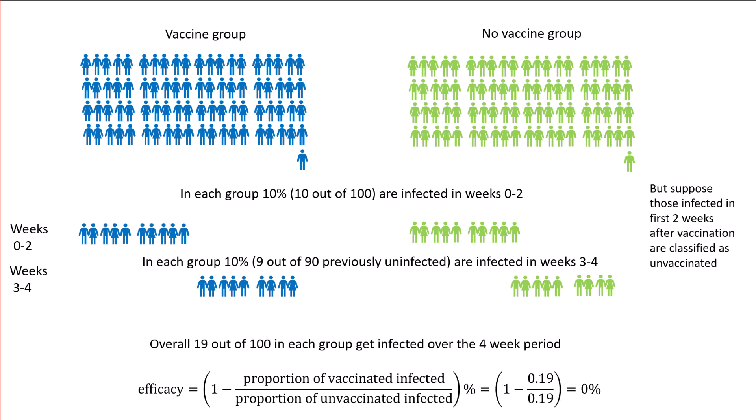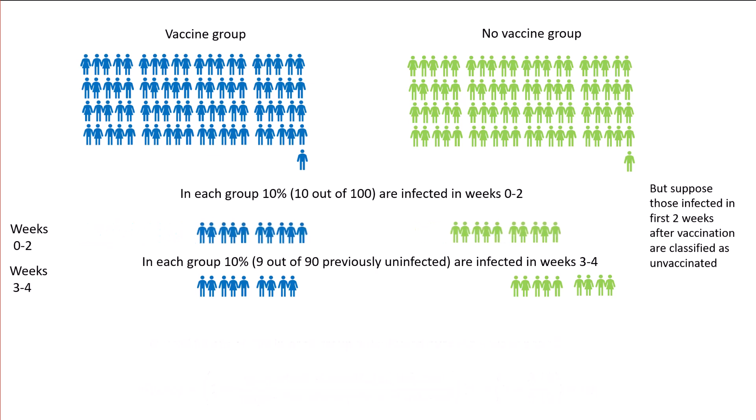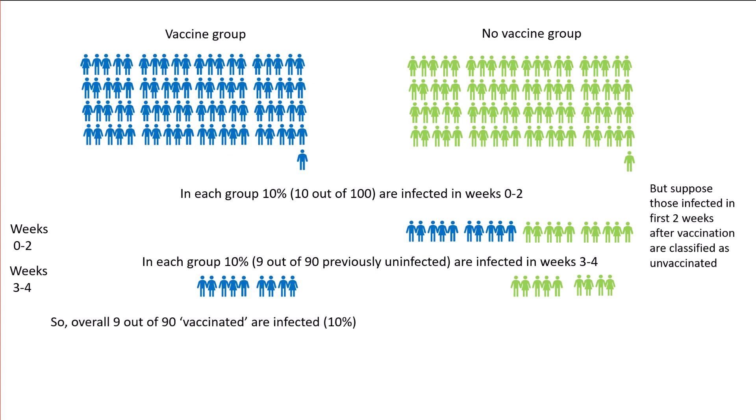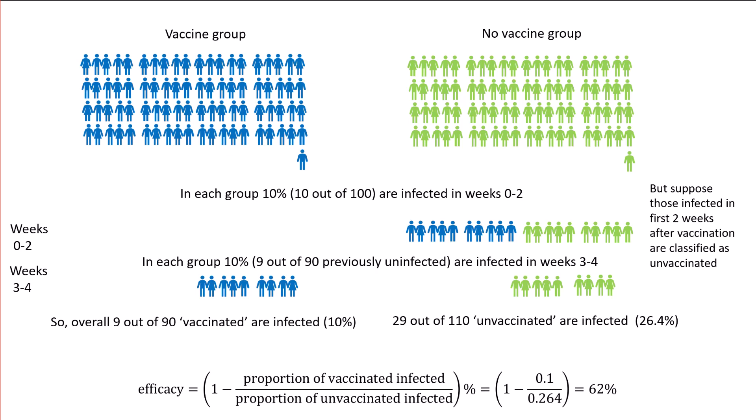But suppose those infected in the first two weeks after vaccination are classified as unvaccinated. Then we move those ten people from the vaccine group who were infected in the first two weeks and classify them as unvaccinated. Now nine out of 90 are considered vaccinated and infected — that's ten percent. But now 29 out of 110 classified as unvaccinated are infected, and that's 26.4 percent. So the efficacy now appears to be 62 percent.